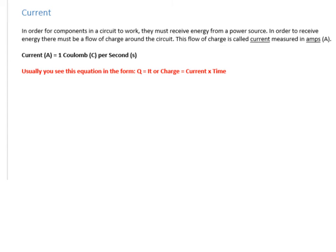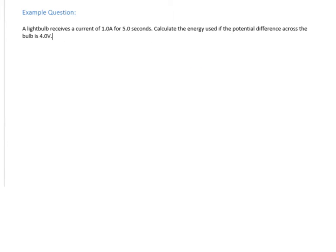Now let's look at current. Your battery essentially allows charges to carry energy from the power source to the devices connected in your circuit. This flow of charges is called the current. The unit of current is the amp, and one amp is one coulomb of charge per second. The equation is usually written as Q equals IT, rearranged to avoid division.